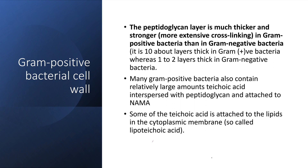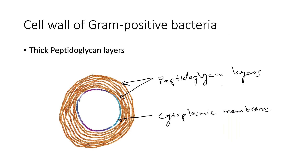The bottom line is that gram positive bacteria have a very thick cell wall compared to gram negative bacteria. You can see in this picture the cytoplasmic membrane, and outside the cytoplasmic membrane there are about 10 layers of peptidoglycan — that is the thick peptidoglycan. This is shown as a coccus, but even in gram positive bacilli it is the same structure, just a different shape.